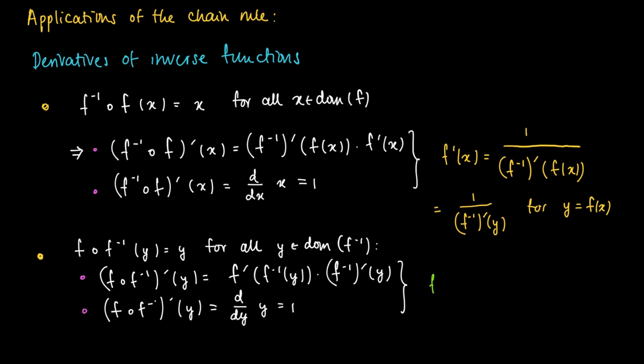And just like before, we find that the derivative of the inverse evaluated in y equals 1 over f'(x). Now, of course, this is the same relation as we found in yellow above.